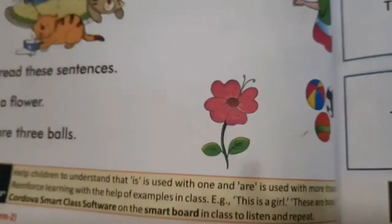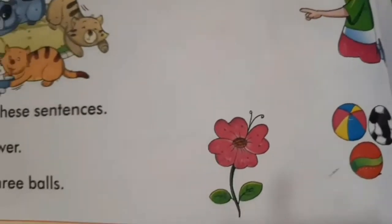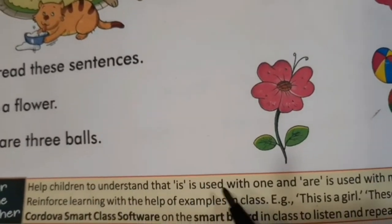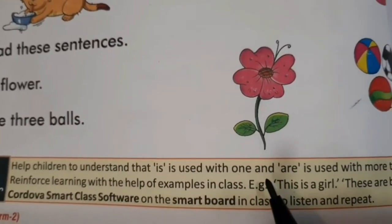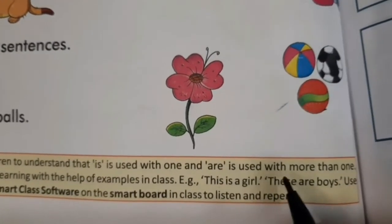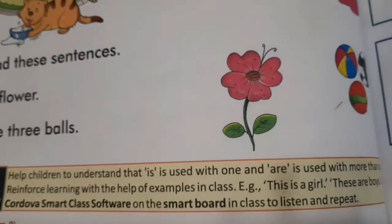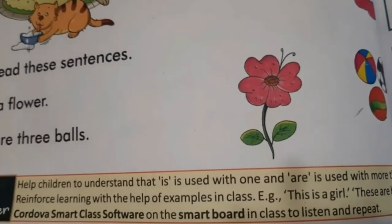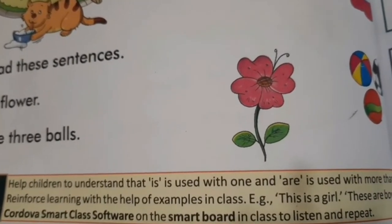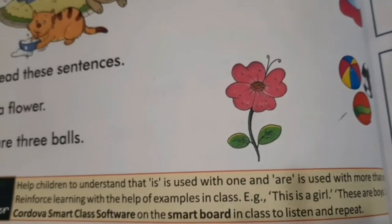Toh abhi aapko difference pata chal gaya. 'Is' hum kis ke liye use karte hain? Aur 'Are' kis ke liye use karte hain? Is is used with one. And Are is used with more than one. Hameh 'is' ka use karna hai ek ke liye, aur 'are' ka use karna hai ek se zyada ke liye.